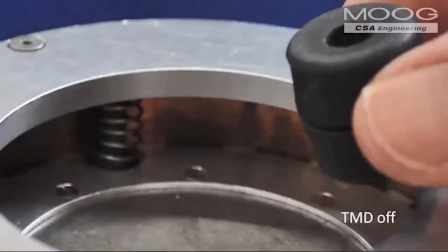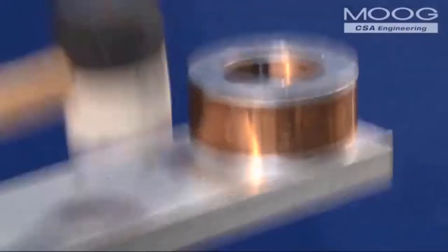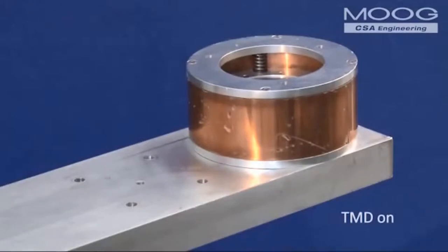To observe the undamped response of the beam, the action of the TMD is negated by the use of a small rubber block or stopper. This effectively turns the TMD off. When the rubber stopper is removed, the TMD is allowed to function.